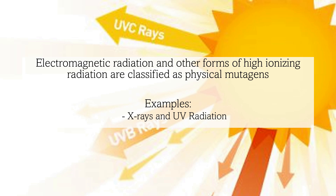Electromagnetic radiation and other forms of high ionizing radiation are classified as physical mutagens. X-rays possess high ionizing energy due to their short wavelengths, which allows them to directly ionize DNA and generate reactive radicals. These radicals can cause insertion mutations, altering the mRNA sequence, or translocation mutations, where segments of chromosomes are swapped.